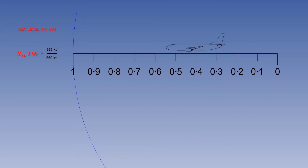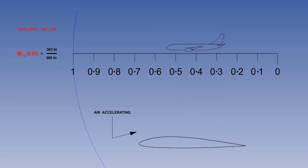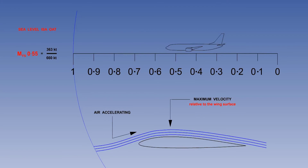We'll now consider something called the critical Mach number. The critical Mach number is not used operationally, but is an important reference for your understanding of high speed flight and your ability to answer exam questions. Here is a view of the wing, with the airflow accelerating over the top surface. The airflow will reach maximum velocity relative to the wing surface at the point of minimum cross-sectional area of the airflow. The maximum velocity of air on the wing will always be faster than the true air speed, otherwise there would be no lift generated.